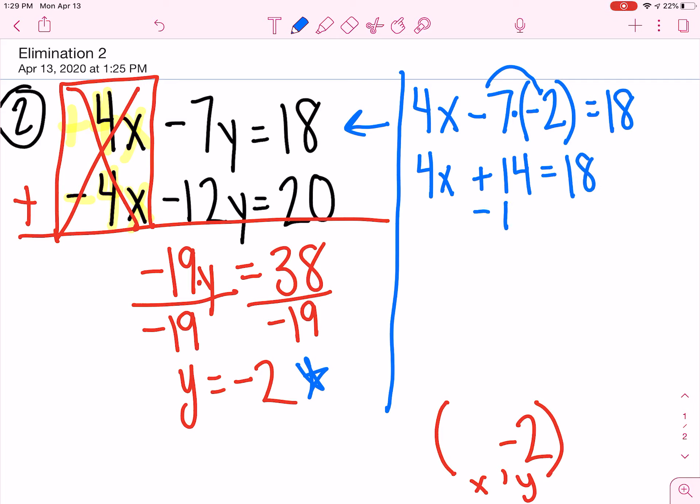I need to get rid of that 14, do the inverse. Left with 4 on this side, and I have 4X. Last step is to divide. X by itself equals 1.